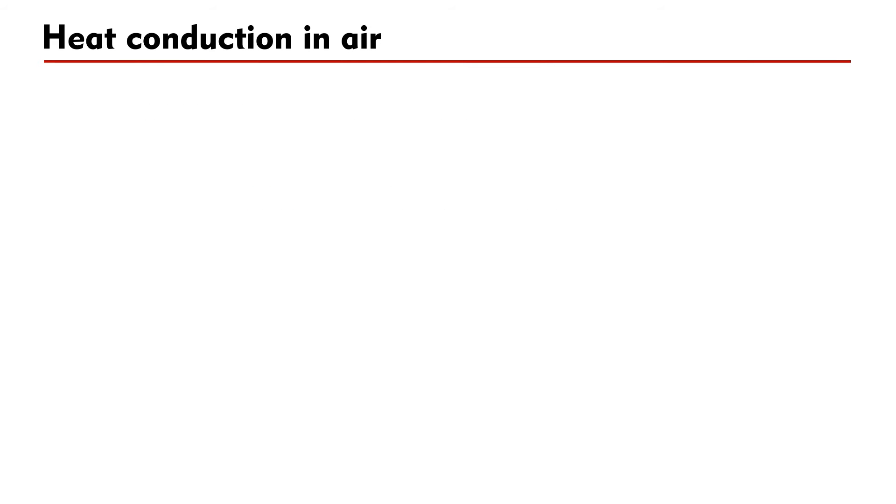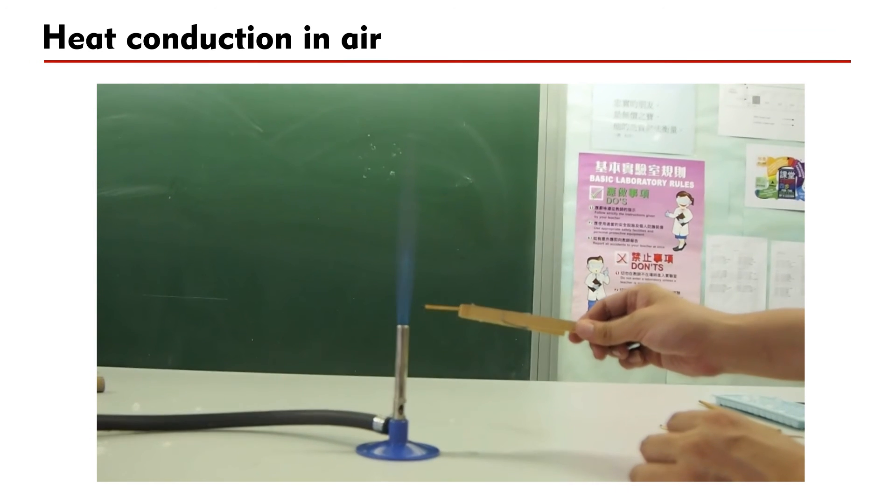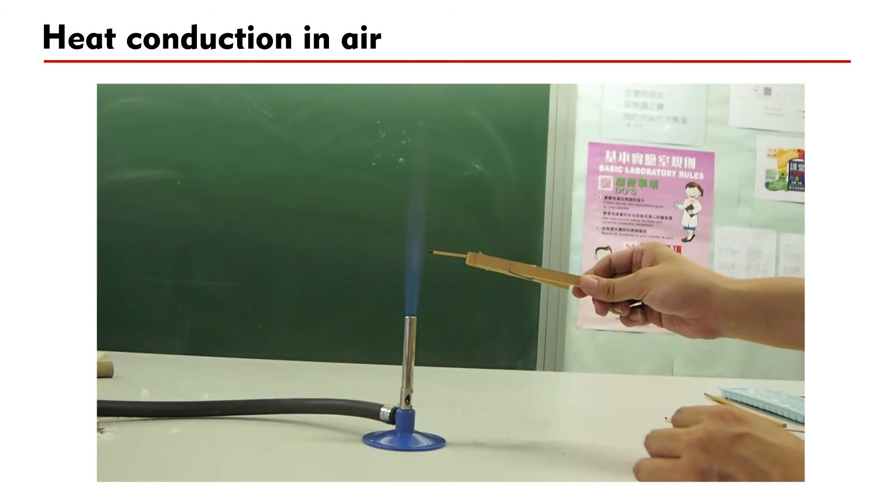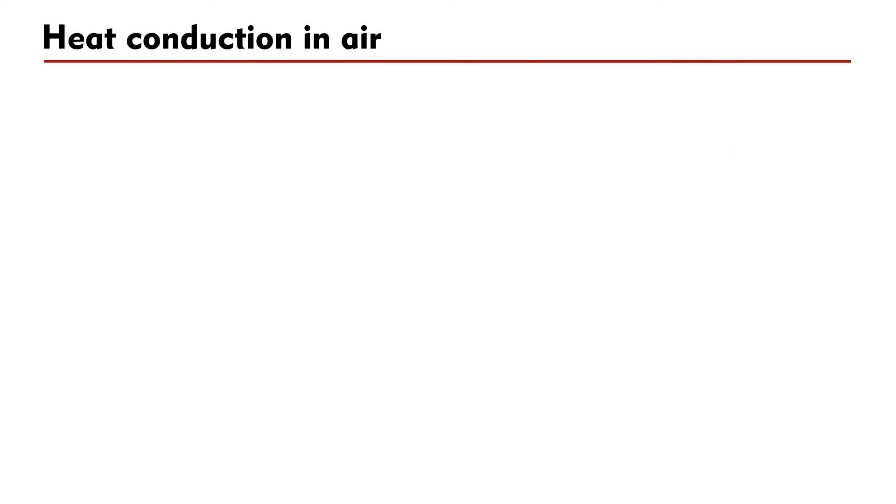Now, let's consider the heat conduction through air. A matchstick is moved horizontally towards the flame of a Bunsen burner. You can see that even the matchstick is less than 1 cm from the flame, it does not ignite. This shows that air is a good heat insulator or a poor heat conductor.